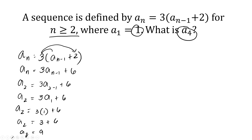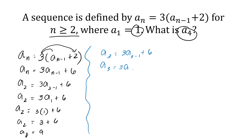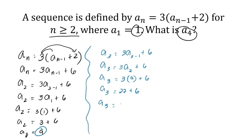Then afterwards, we are going to get the value of a sub 3. So a sub 3 is equal to 3 times a sub 3 minus 1 plus 6. A sub 3 minus 1 is a sub 2. The value of a sub 2 is already computed and that is 9. So a sub 3 is equal to 3 times 9, which is 27, plus 6. A sub 3 is equal to 33.